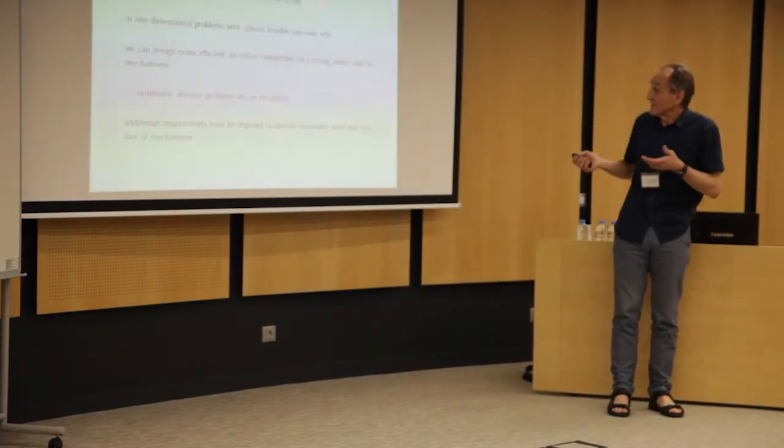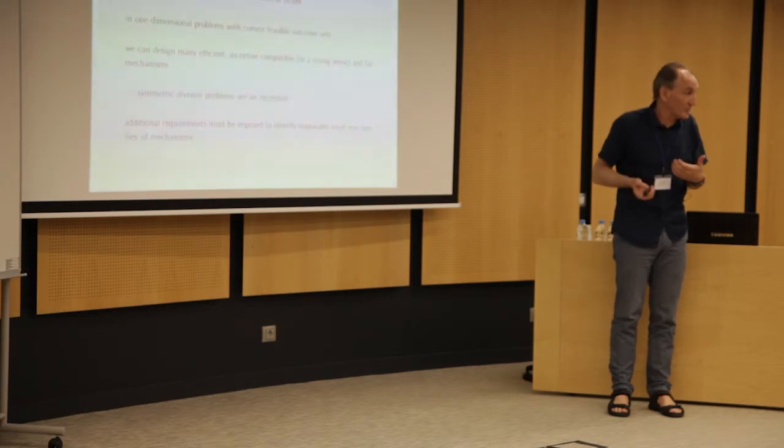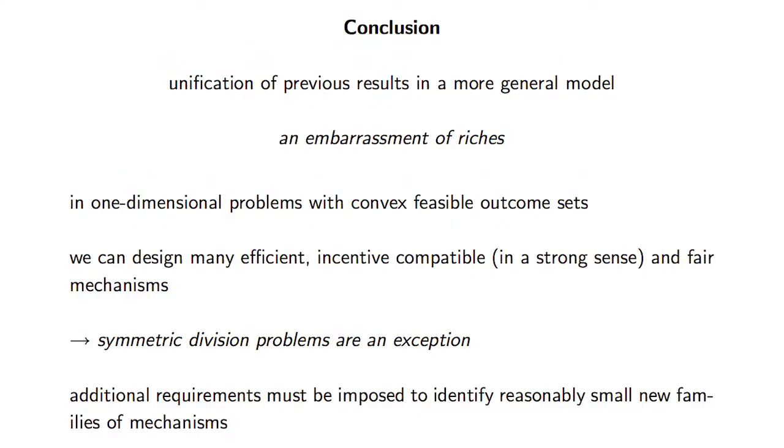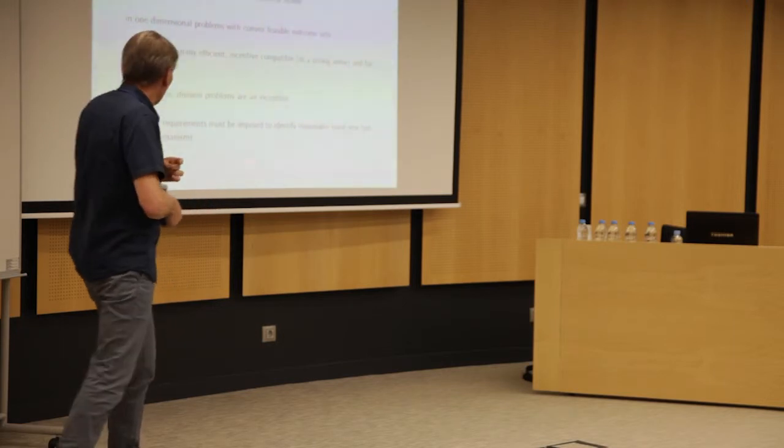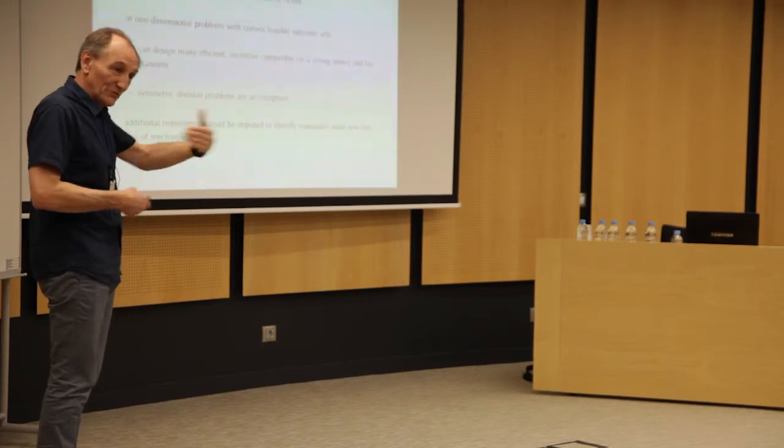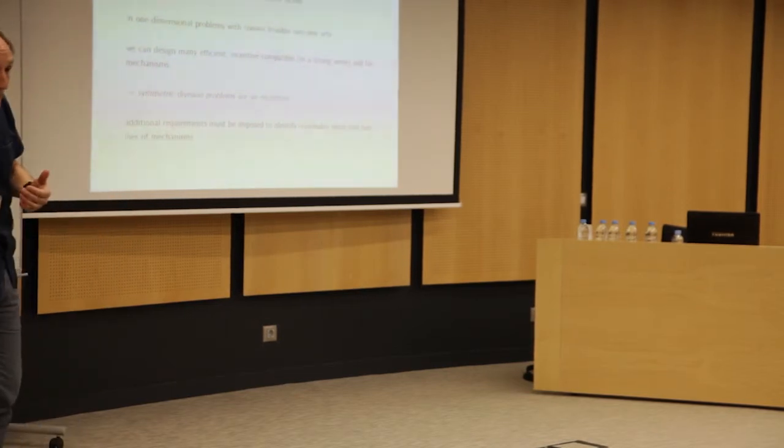So right now, the conclusion is that we have an embarrassment of riches. When the model involves a set of full dimension, as well as in many cases, probably where it involves a division, but with non-symmetric constraints, then the set of good rules is enormous. And I have some examples that I'm starting to explain a bit in the paper where you see that you really have, there is a lot of work to be done, I think, to go to small, nice families of rules in specific models. All right. Thank you.